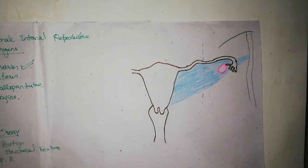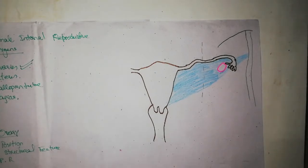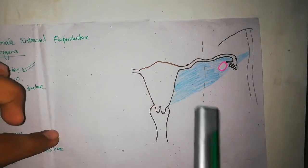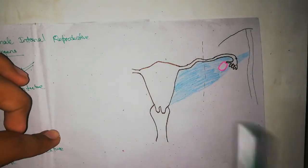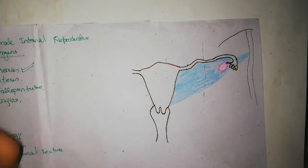What is the ovarian fossa? The ovarian fossa is a shallow depression on the lateral pelvic wall.